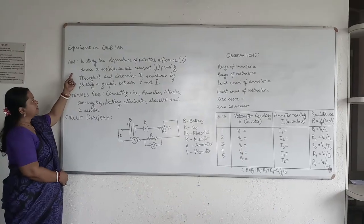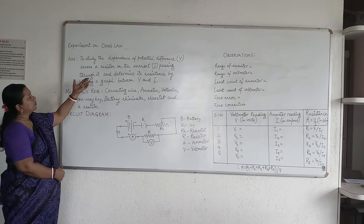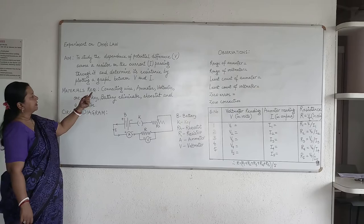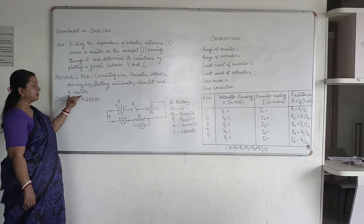The aim is to study the dependence of potential difference with respect to current through a resistor. The materials required are connecting wire, ammeter, voltmeter, one-way key, battery eliminator, rheostat, and a resistor.